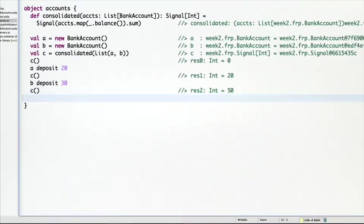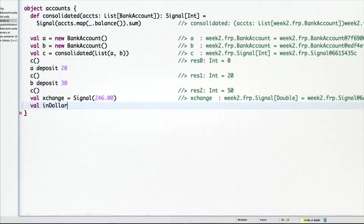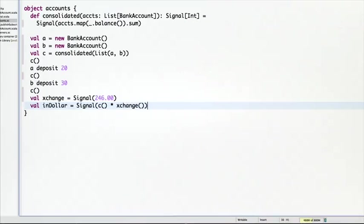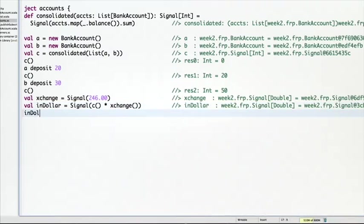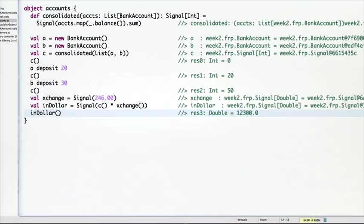Let's go a little bit further and say we want to have another signal which defines an exchange rate. Let's say the exchange rate is first 246, let's say dollars for bitcoins. And let's say our value, our total sum in dollars is then what we had before. The signal that takes C times the signal exchange rate.